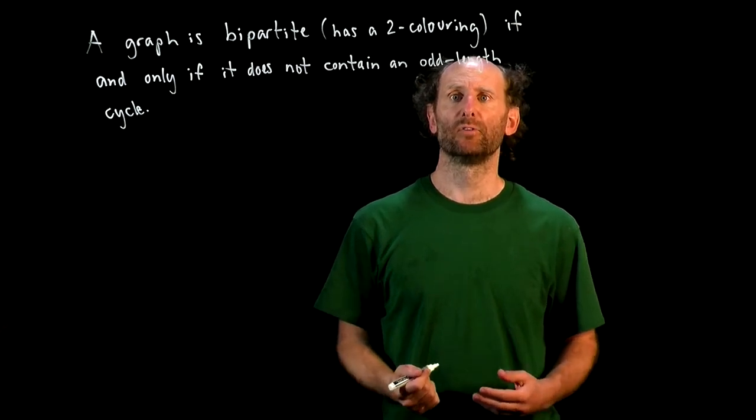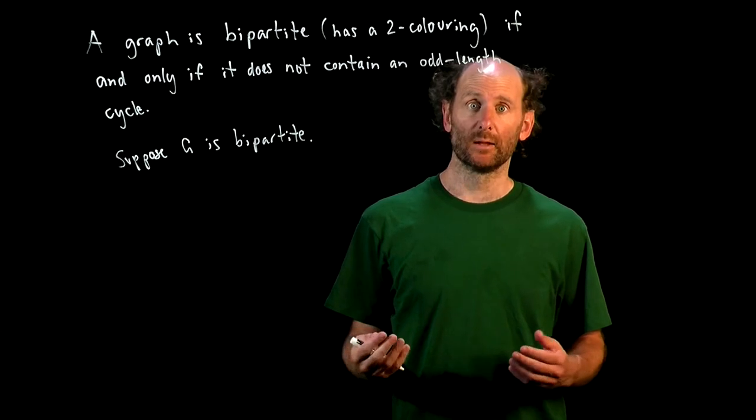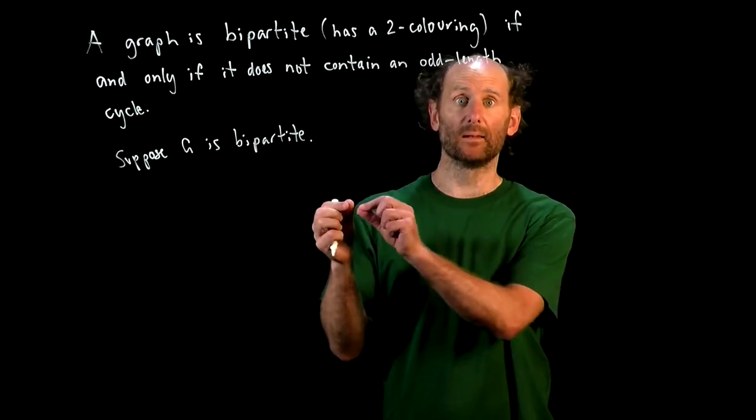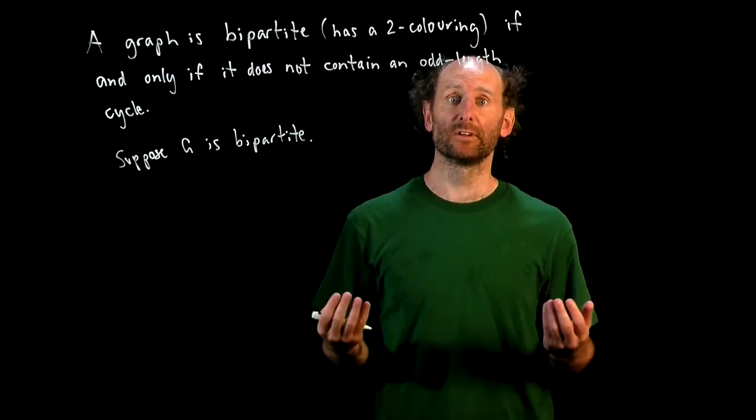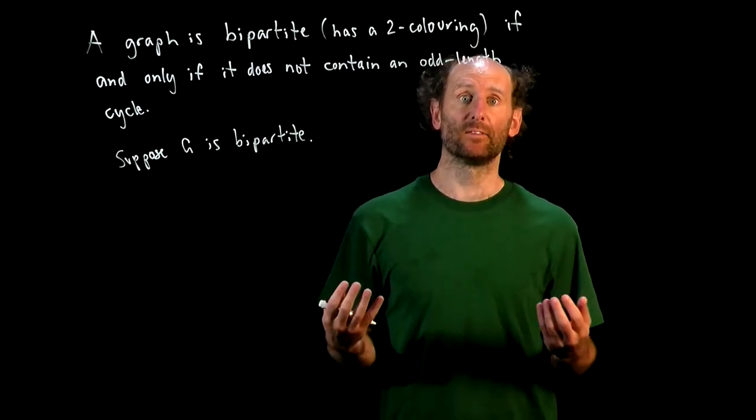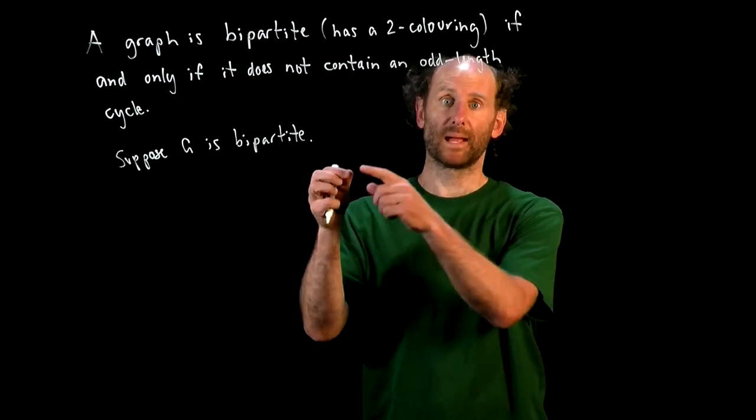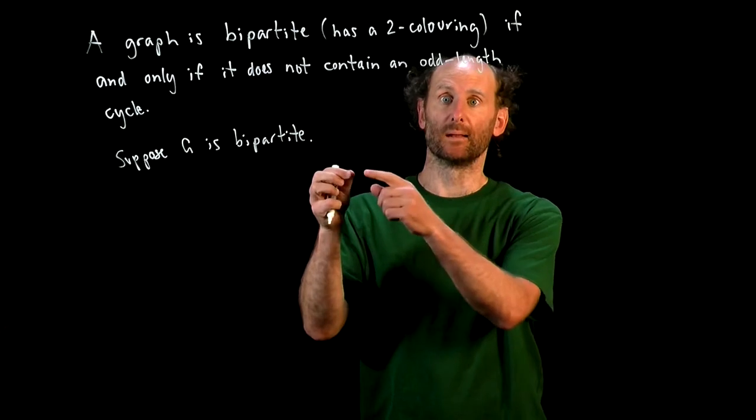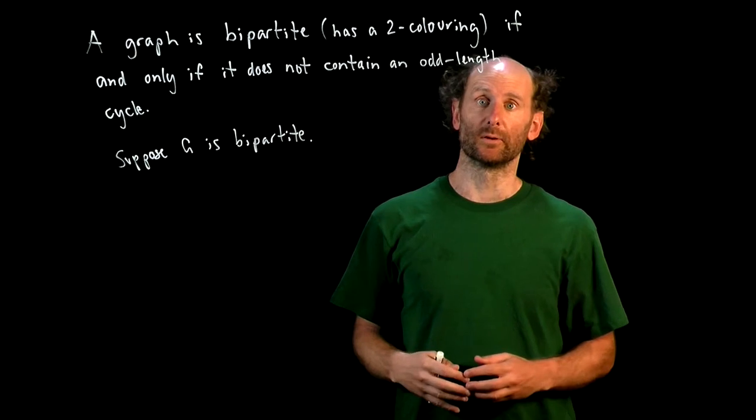So first, let's suppose G is bipartite. Then any cycle in G must start and end on the vertex of the same color. And since edges only exist between vertices of different colors, the length of any cycle must be a multiple of two. We've gone from one side to the other and back again, and back again. So we've got an even number, and there are no odd-length cycles.